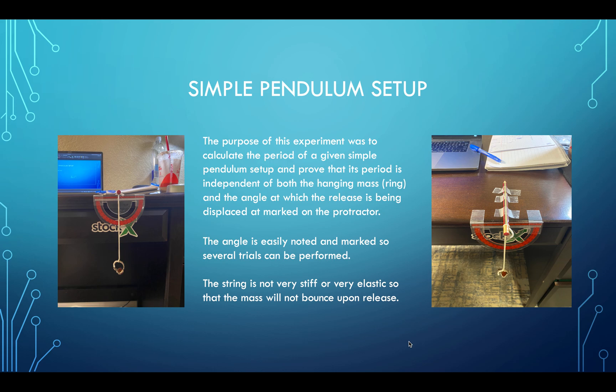The purpose of our experiment was to calculate the period of a given simple pendulum setup and prove that its period is independent of both the hanging mass, which in this case was my ring, and the angle at which the release is being displaced. The angle was marked on the protractor for accuracy. We were able to perform several trials with very low uncertainty. The string that I used was not very stiff or very elastic, so that the mass would not bounce upon release.